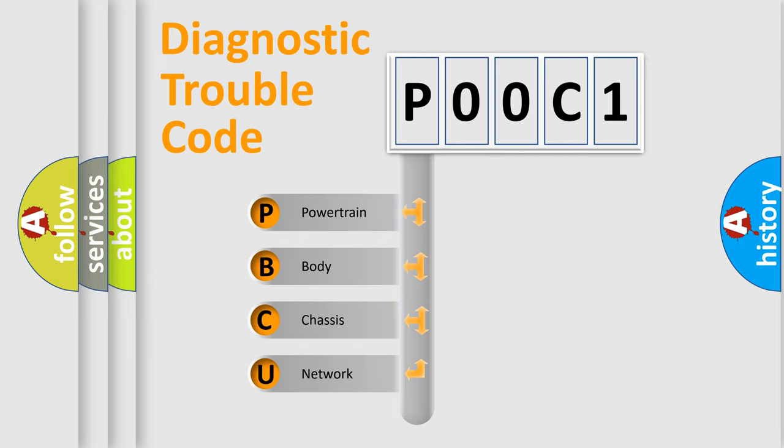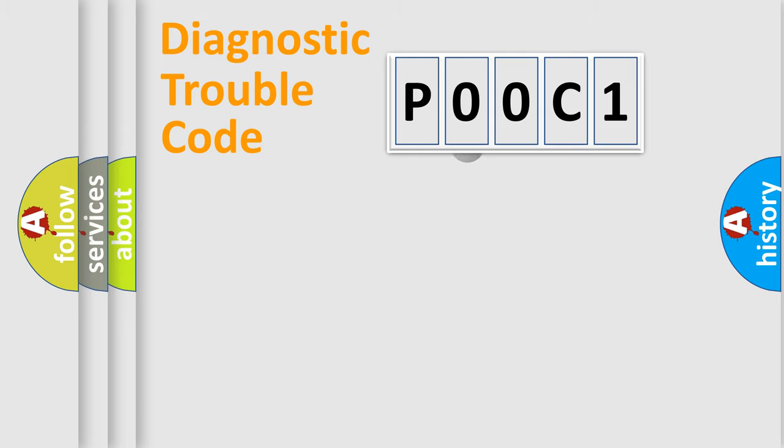We divide the electric system of automobiles into four basic units: Powertrain, Body, Chassis, and Network. This distribution is defined in the first character code.